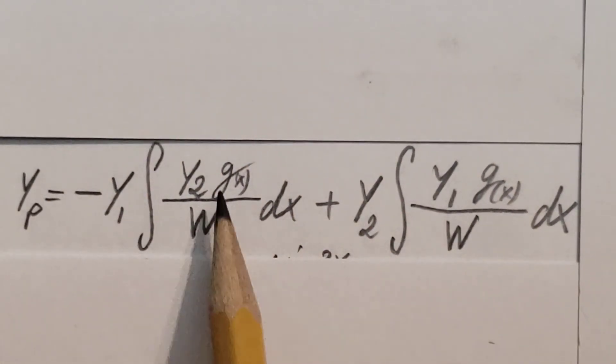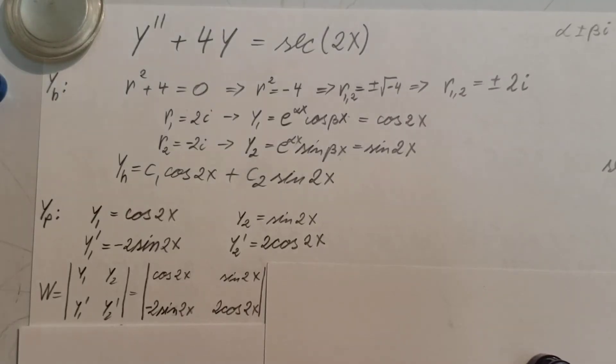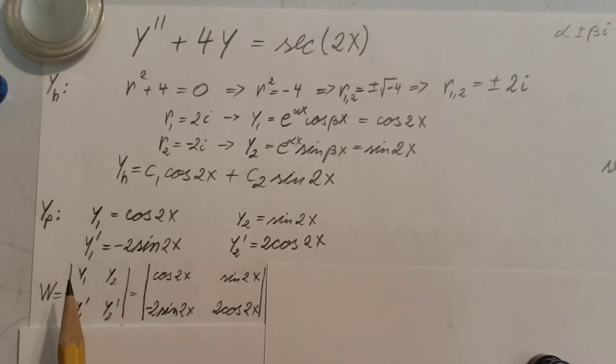As we can remember, we have W in it, which is our Wronskian. So we're going to have to go ahead and solve that first. Now here's the Wronskian formula. For this I'm going to need y1, y2, and the first derivative of both of them. So that's what you can see happening here: y1 and y2, I took the derivative of y1, derivative of y2.